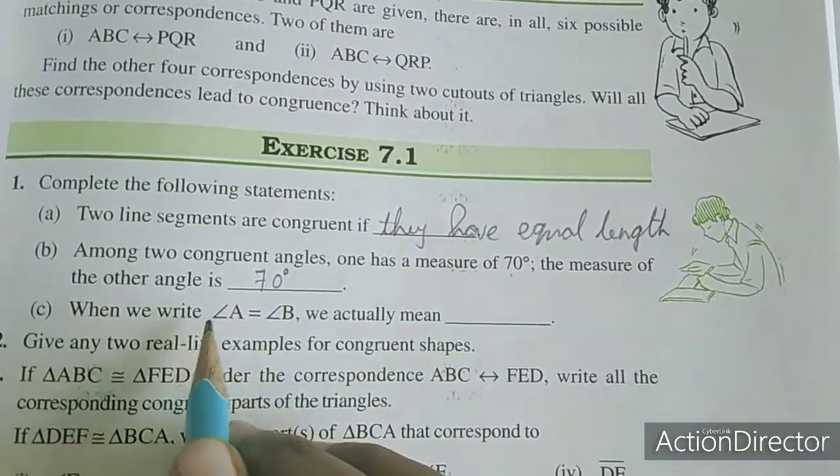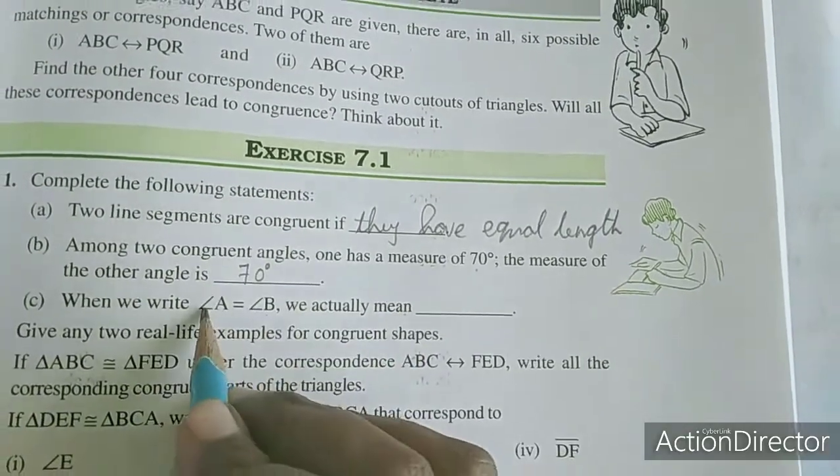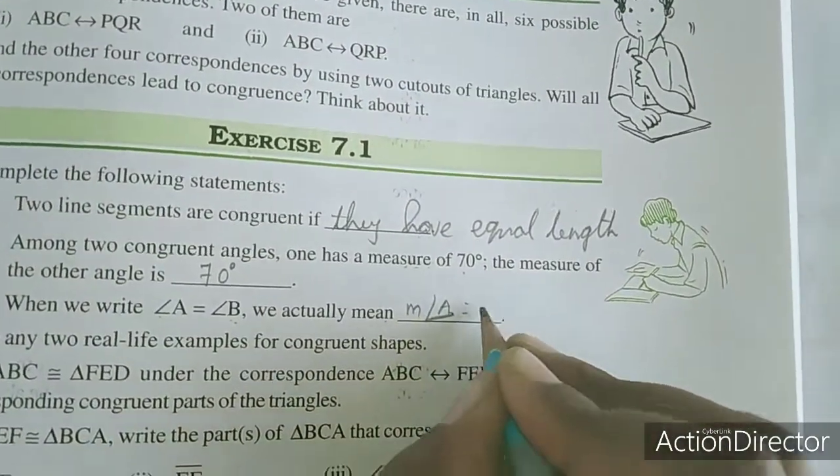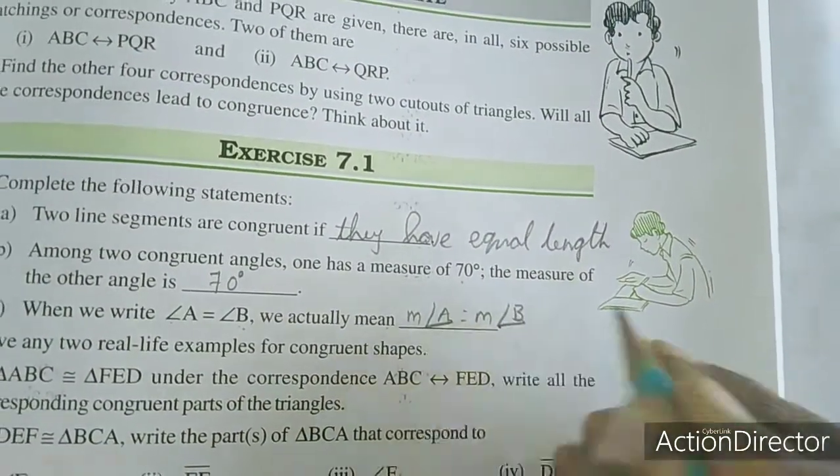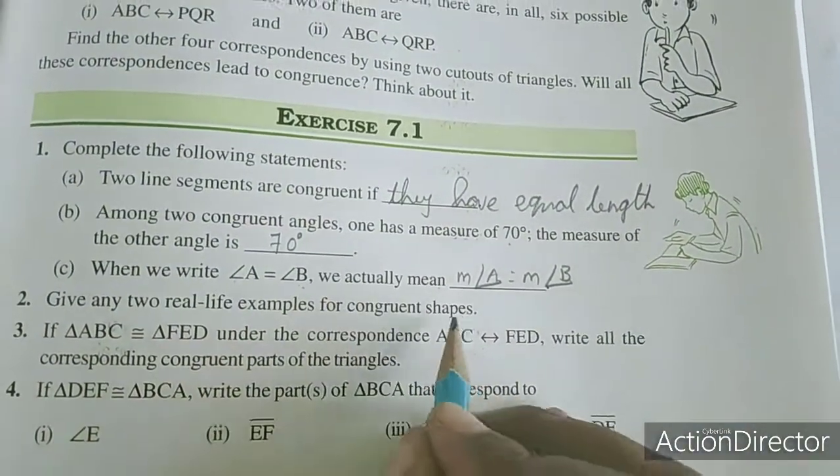Part c: When we write angle A equals angle B, we actually mean angle A is congruent to angle B.